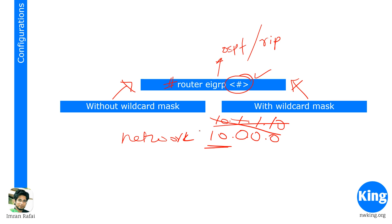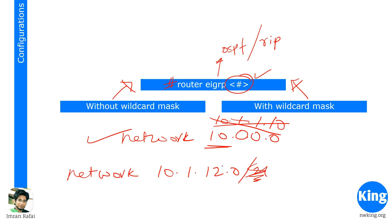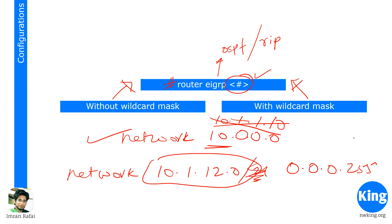If you want to specify a certain subnet, you use a wildcard mask. For example, 'network 10.1.12.0 0.0.0.255' is nothing but the 10.1.12.0 /24 network. So it will accept the whole subnet of 10.1.12.0 if you use the wildcard mask format. You can configure EIGRP either without a wildcard mask for classful networks, or with a wildcard mask for classless subnets.